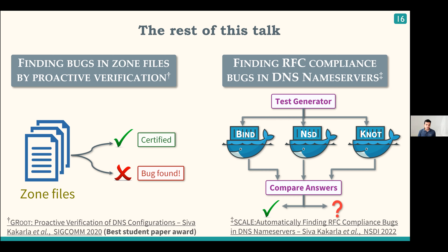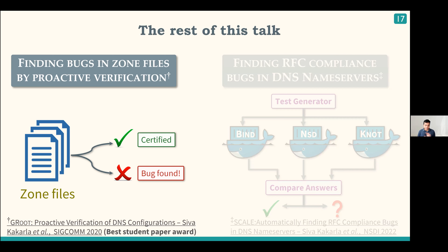For the rest of the talk, I'm going to discuss two projects based on two DNS components I've been working on to minimize DNS-related outages. The first project is about automatically and formally verifying the logical correctness of zone files, assuming a correct name server implementation per the RFCs. The second project is about finding RFC compliance errors in DNS name server implementations via automatic test generation.